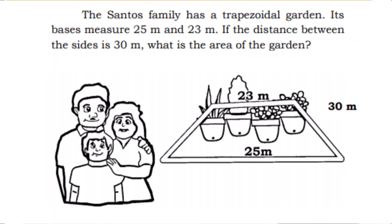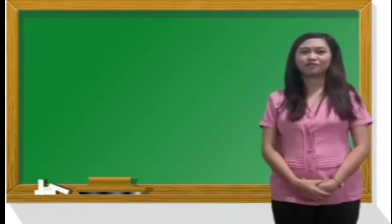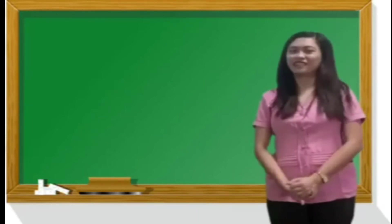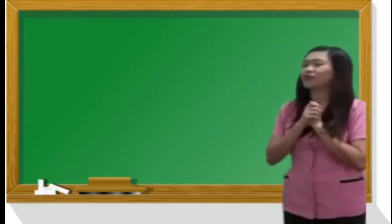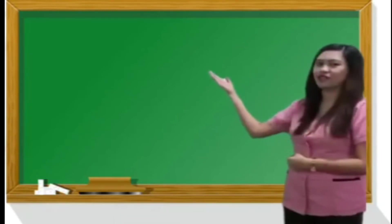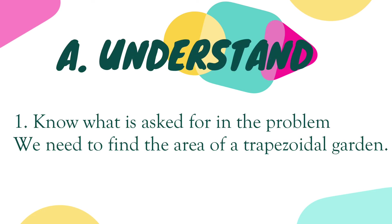We have here the first problem. The Santos family has a trapezoidal garden. Its bases measure 25 meters and 23 meters. If the distance between the sides is 30 meters, what is the area of the garden? Let's figure it out. To analyze and solve the problem, we use these steps. Step A — Understand: We need to find the area of the trapezoidal garden.